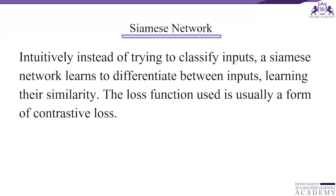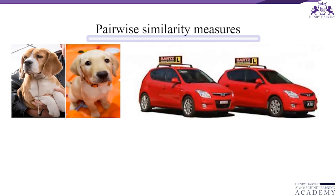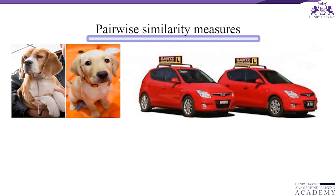Let us try to understand the Siamese network in more detail. There are two ways of training Siamese networks. The first method is learning pairwise similarity scores, which is the easy one. The Siamese network needs a big dataset of labeled data, as in supervised learning. We will be using two kinds of samples: positive samples and negative samples.